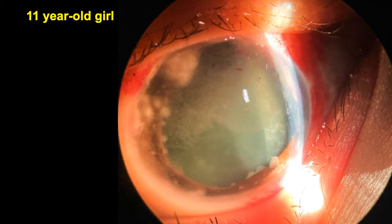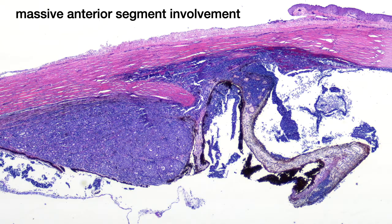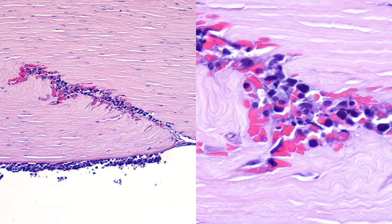This 11-year-old girl initially was seen in Hawaii and was thought to have granulomatous uveitis and underwent fine needle aspiration biopsy. This showed a small blue cell tumor. The eye was enucleated, and she was found to have massive anterior segment involvement, including invasion of the ciliary body stroma, tumor in the anterior chamber, and tumor infiltrating the iris and trabecular meshwork. The FNAB tract in the cornea contains a significant number of viable retinoblastoma cells. In the past, fine needle aspiration biopsy of eyes with retinoblastoma was somewhat discouraged due to the danger of extraocular extension.